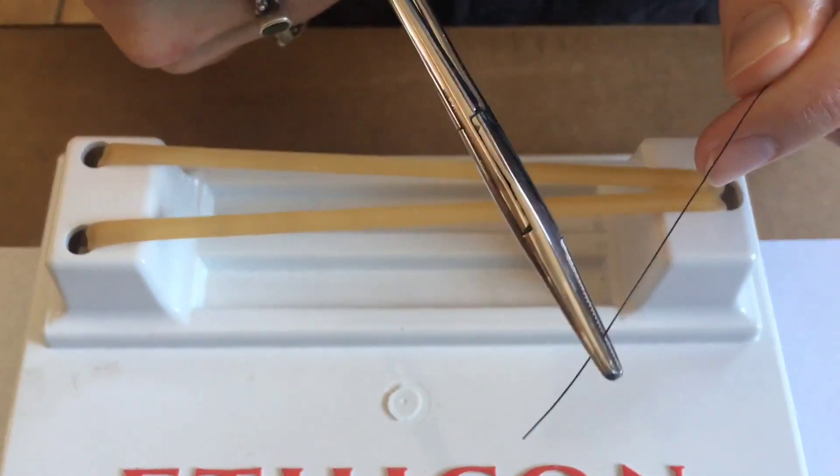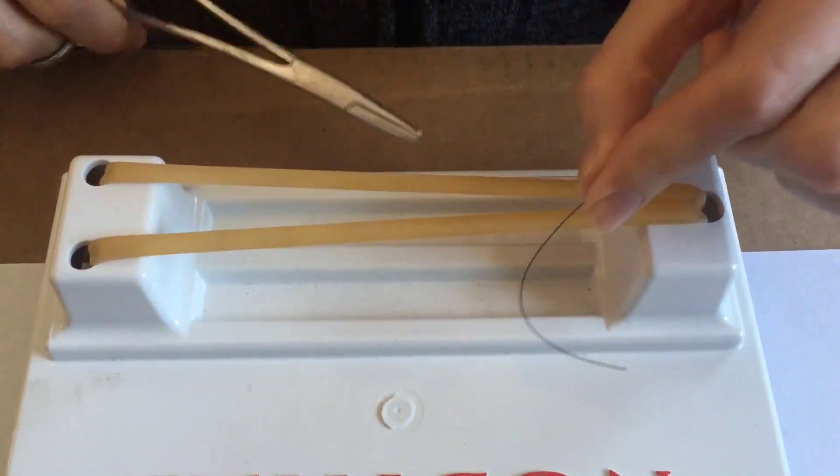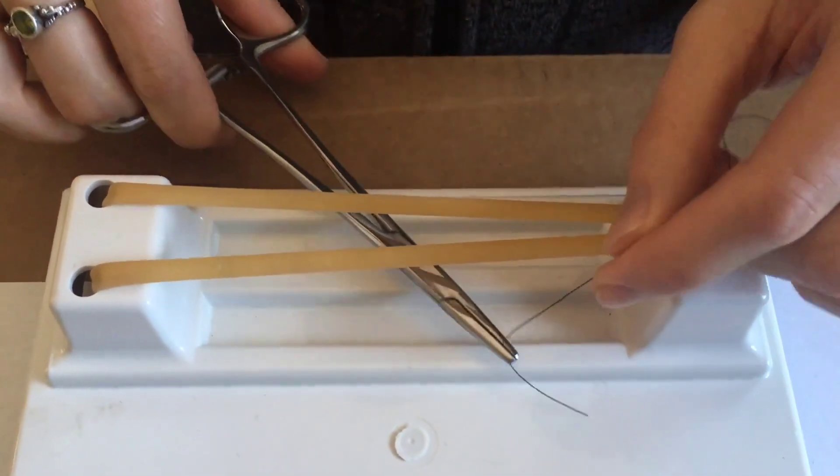Take your suture with the non-needle side and pass it over. Then put your needle drivers underneath and pull it through.